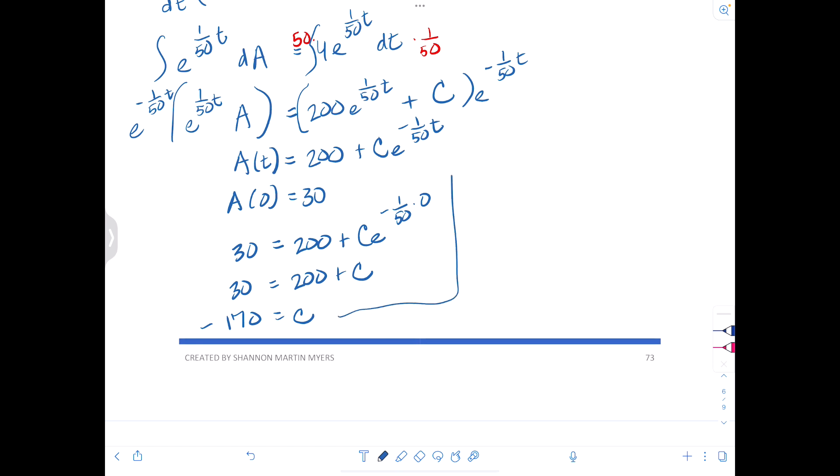So that's going to give us our model of A(t) equals 200 minus 170 e to the negative t/50. And then we just make sure that we answered all the questions.